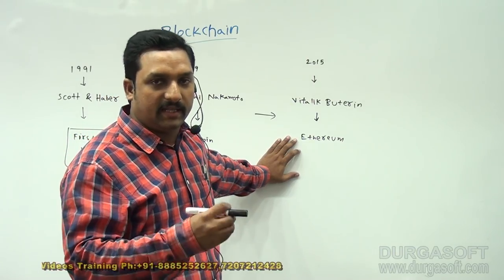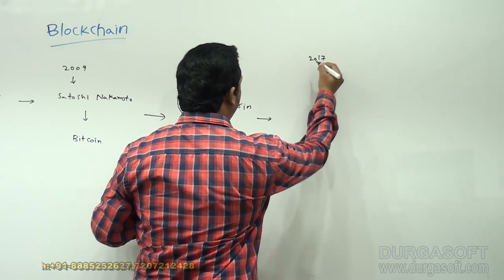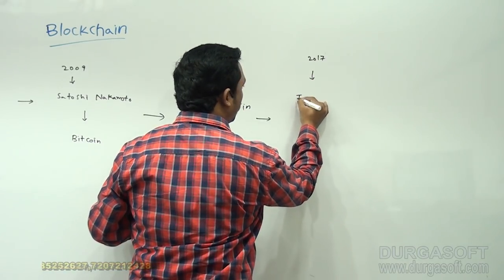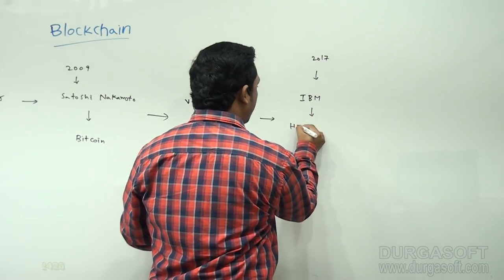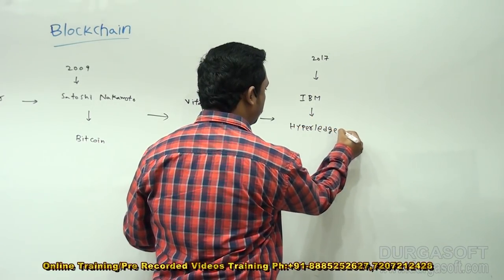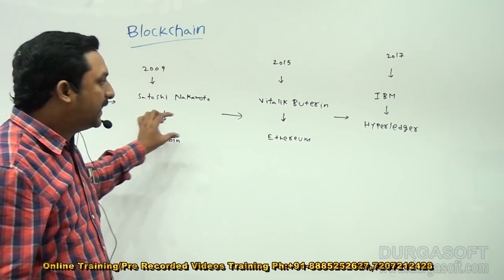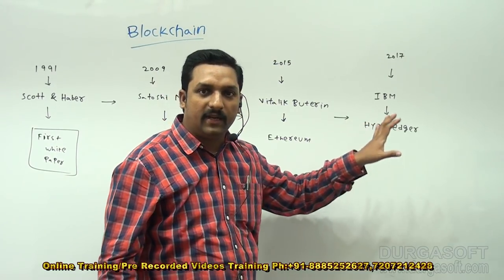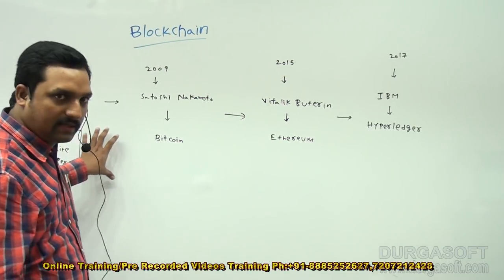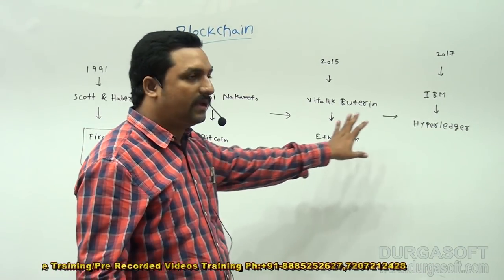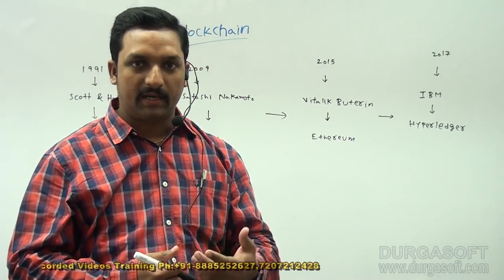In 2017, IBM Corporation — International Business Machine Corporation — implemented Hyperledger. So Bitcoin, Ethereum, and Hyperledger are all different implementations of blockchain technology. Blockchain is the technology behind Bitcoin, Ethereum, and Hyperledger. In the future, more implementations may come — any number of implementations can be created based on blockchain.